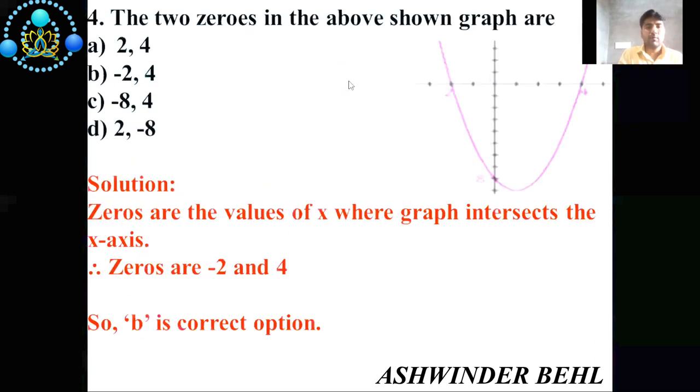Now question number 4: The two zeros in the above shown graph are (a) 2, 4, (b) -2, 4, (c) -8, 4, (d) 2, -8. Now we will solve this question. Zeros are the values of x where graph intersects the x-axis. So you will see here zeros are -2 and 4. So b is the correct option.